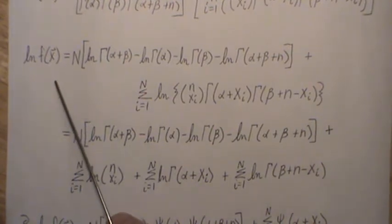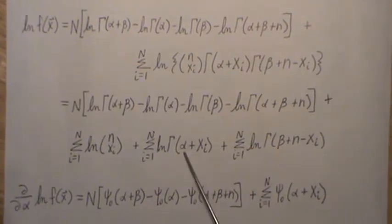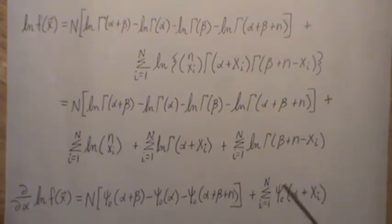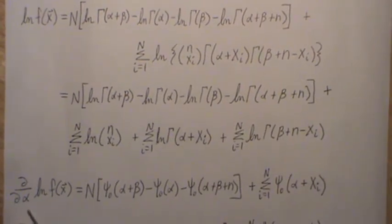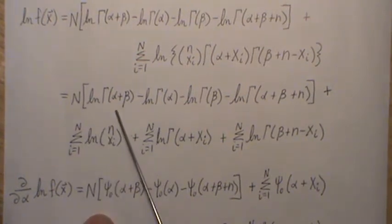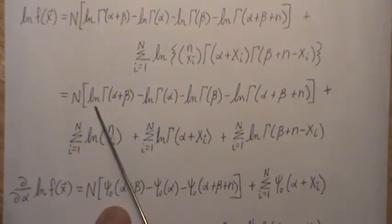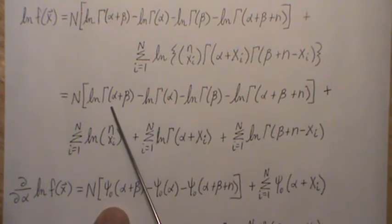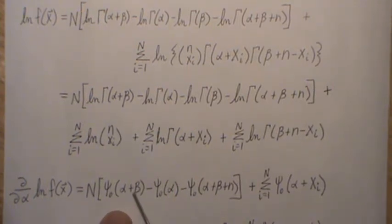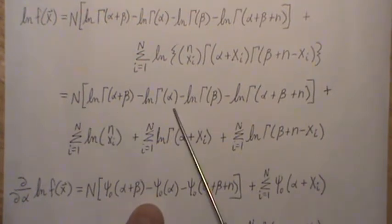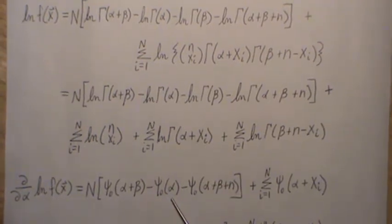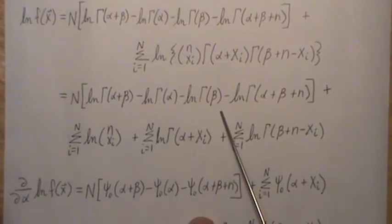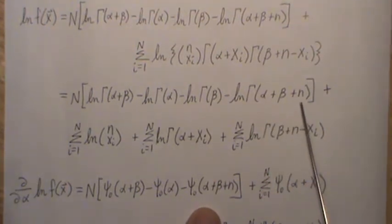To maximize this log likelihood, we take partials with respect to alpha and partials with respect to beta, then solve two equations in two unknowns. For the partial with respect to alpha: the partial of the log of gamma is what's called a digamma function. We get digamma of alpha and beta, and since we're taking it with respect to alpha, we get digamma of alpha — this is constant — and then digamma of alpha plus beta plus n.